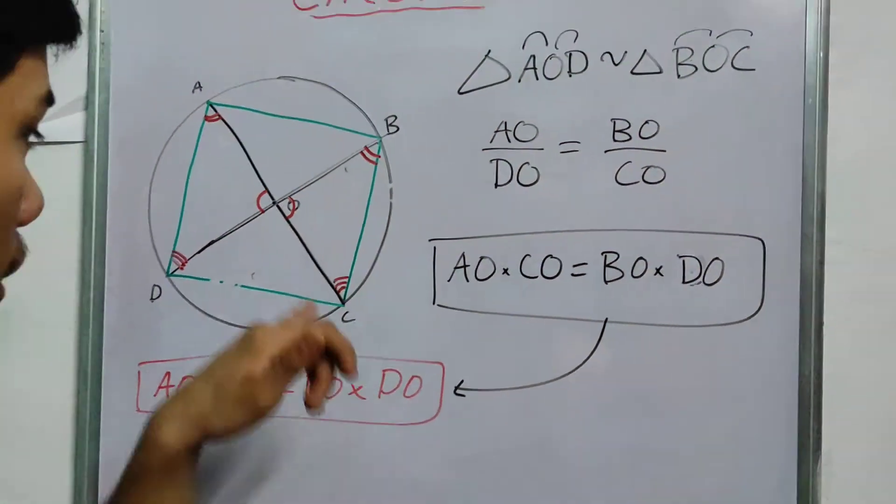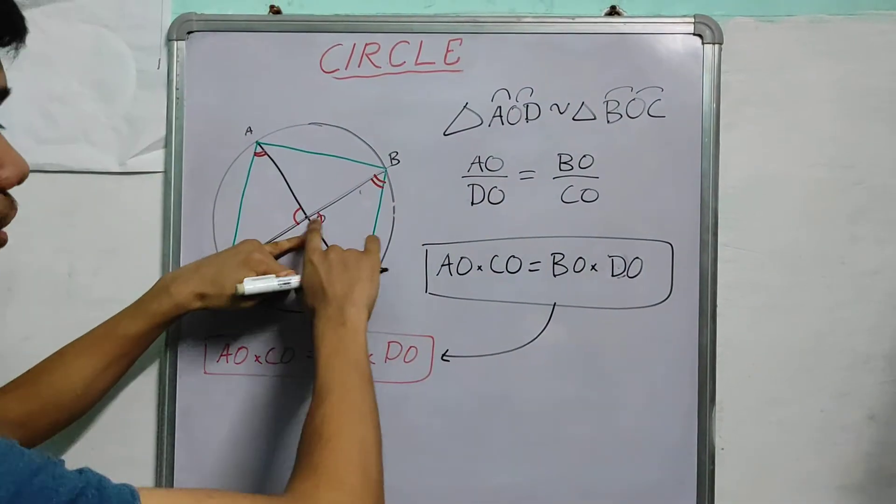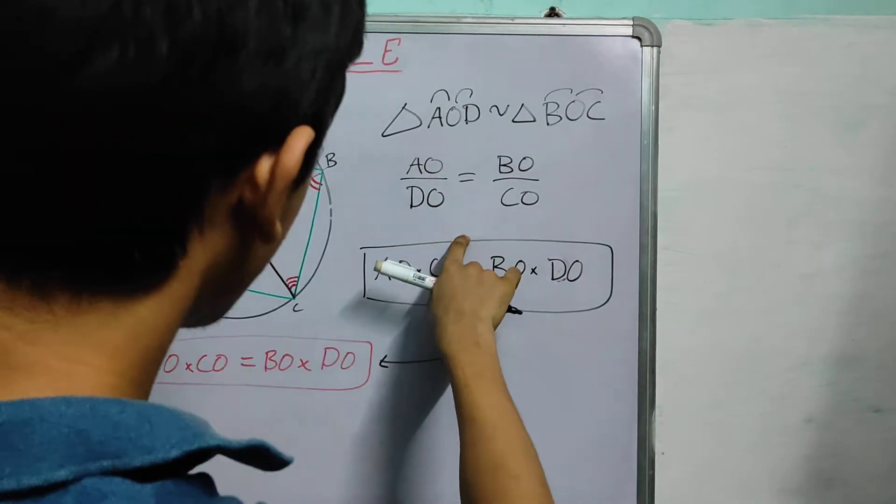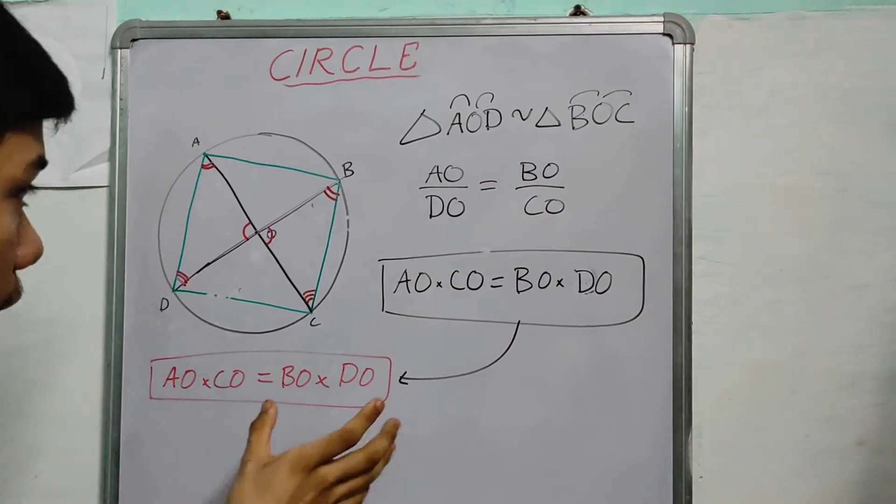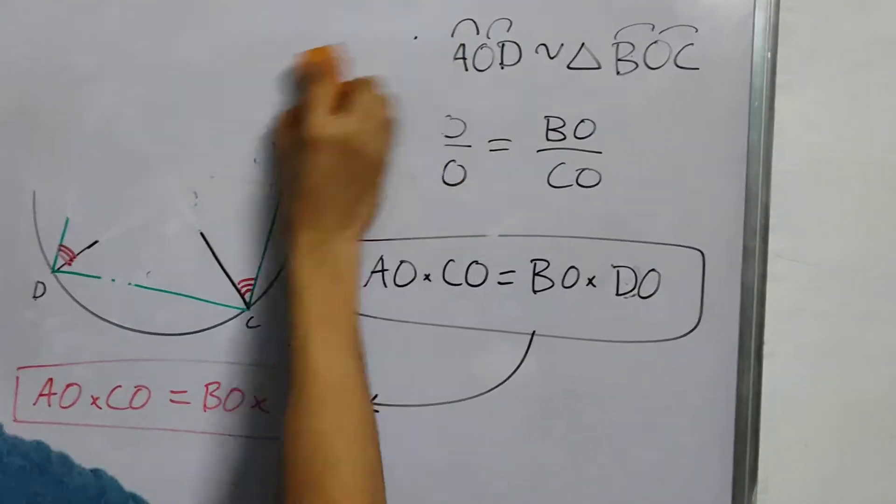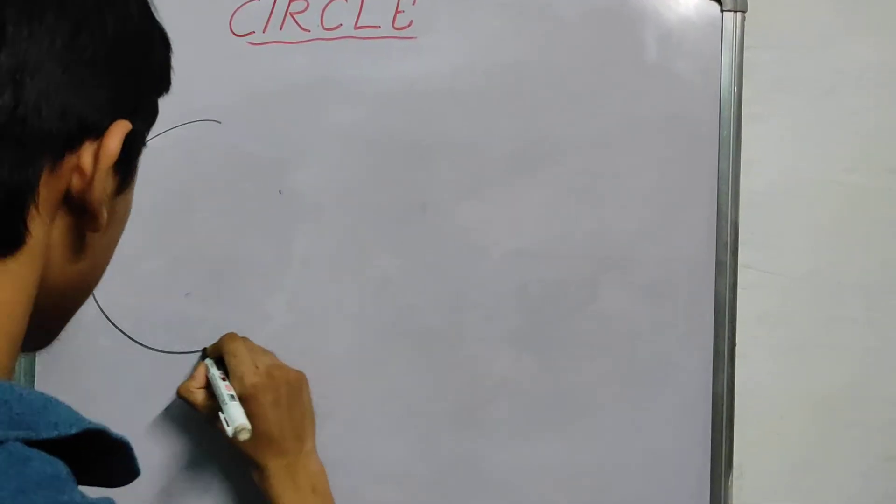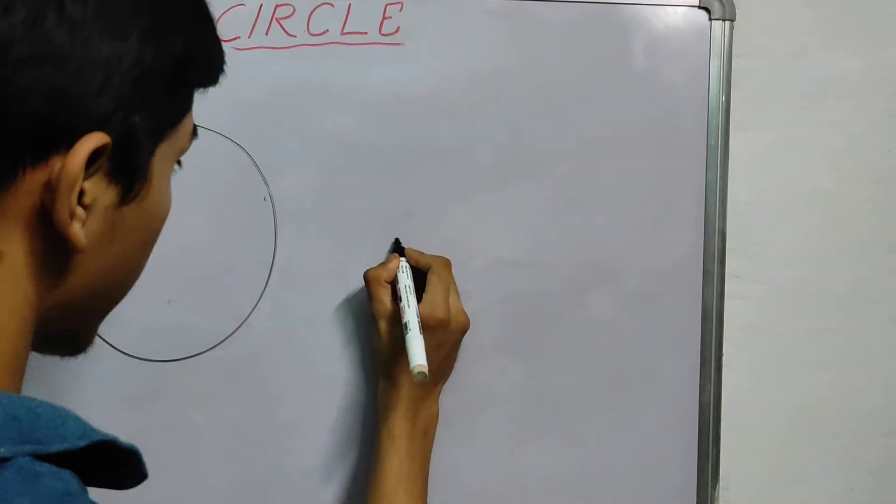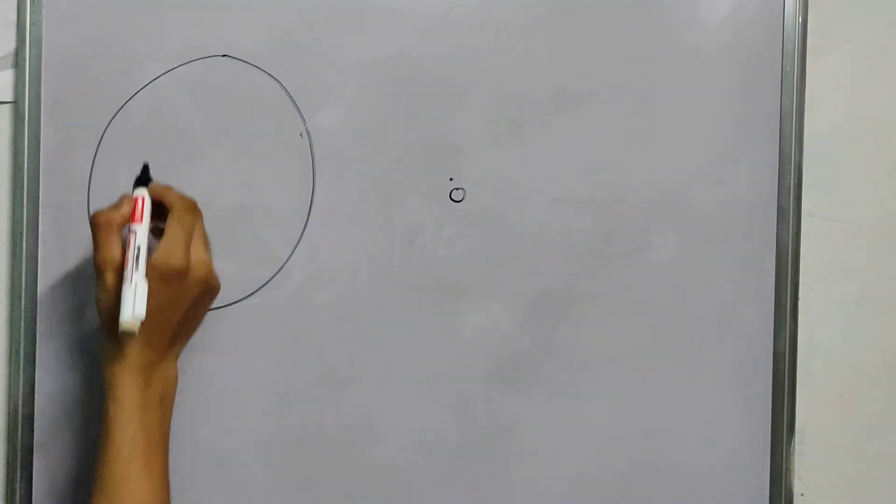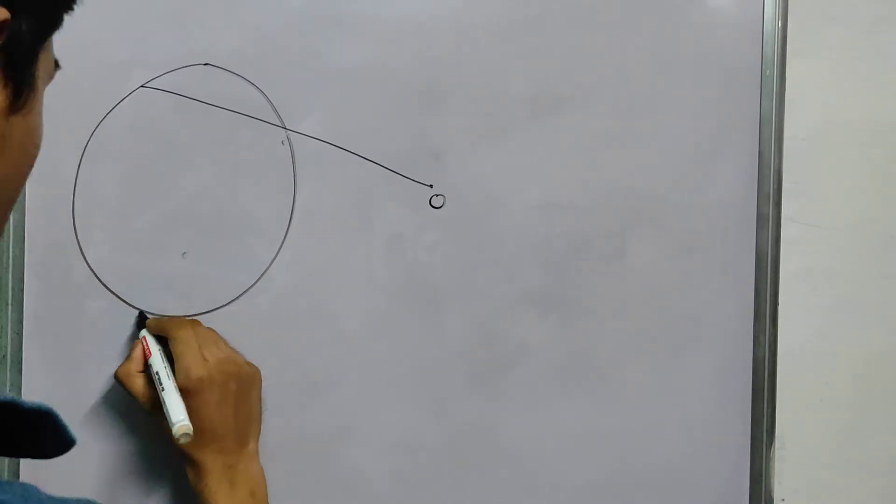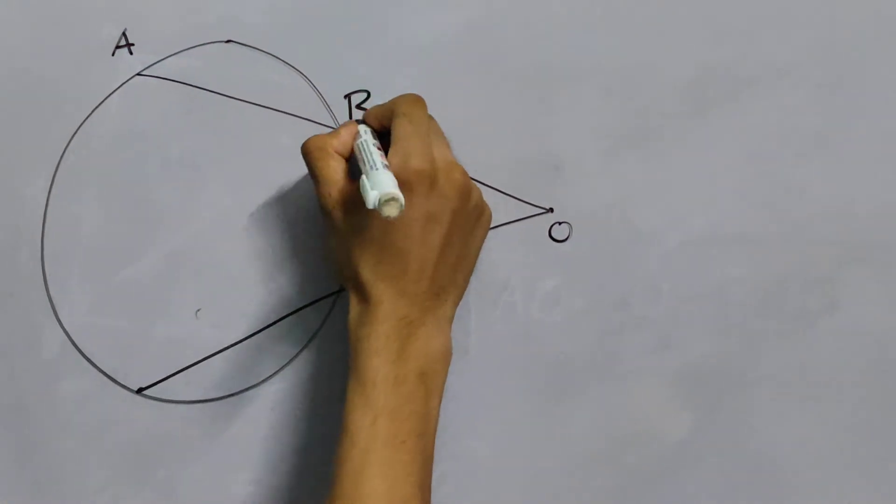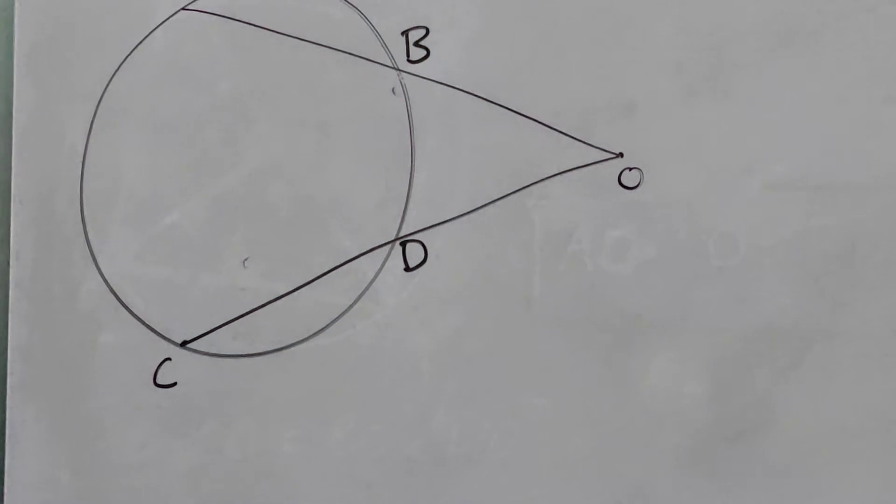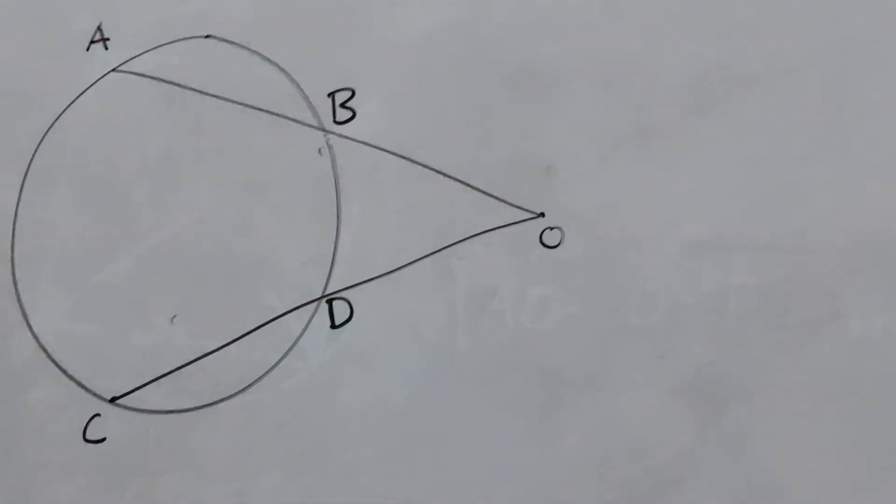Now what if this point O was outside the circle, somewhere over here, and then we draw the lines, how will it change, or will it change? Again, let me take a circle, I take the point O outside the circle, and I draw these two lines, again, A, B, C, D. Now let's look at how it will change.